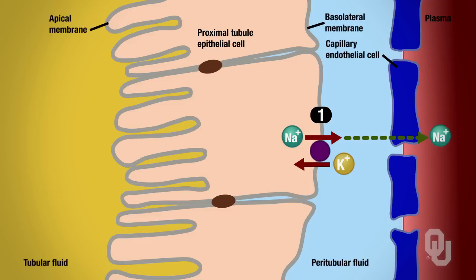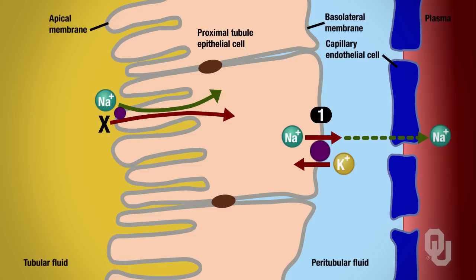Into the tubular lumen, sodium is at a high concentration moving toward the low concentration we just established. Using this transport protein without direct energy, X must be moving from a low concentration toward a high concentration. Because one ion moves along a gradient and the other solute moves against a gradient requiring a carrier protein and indirect energy, number two on the apical membrane is secondary active transport — specifically sodium-X co-transport or symport.